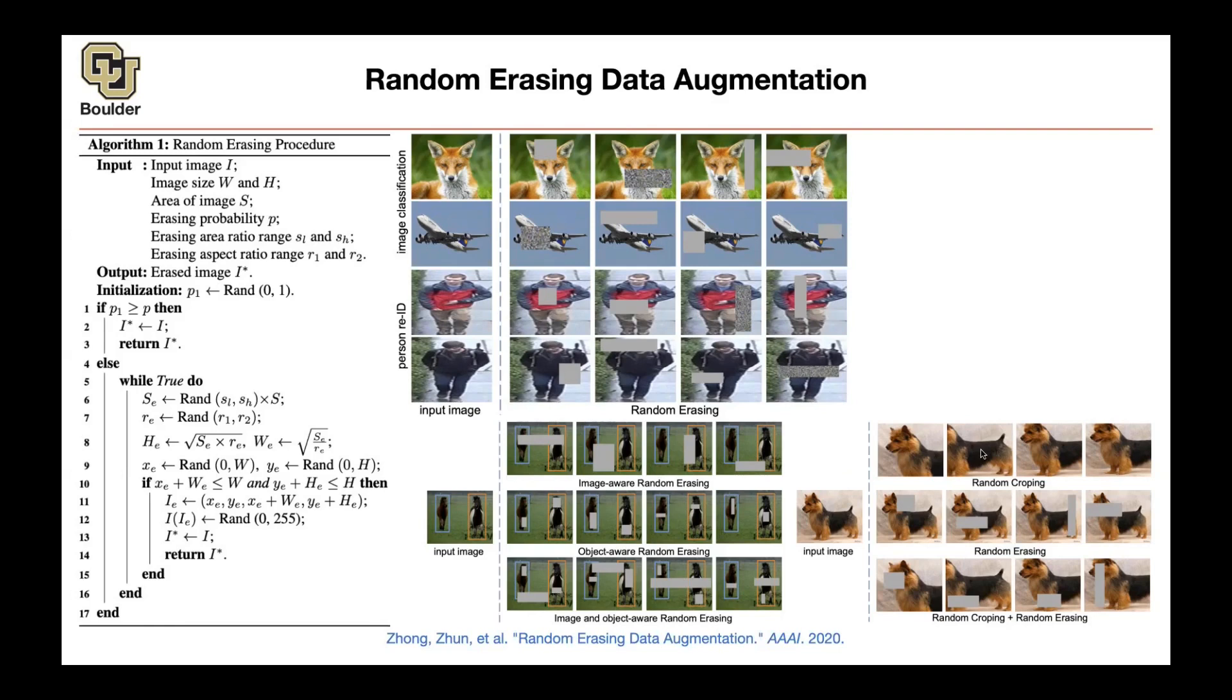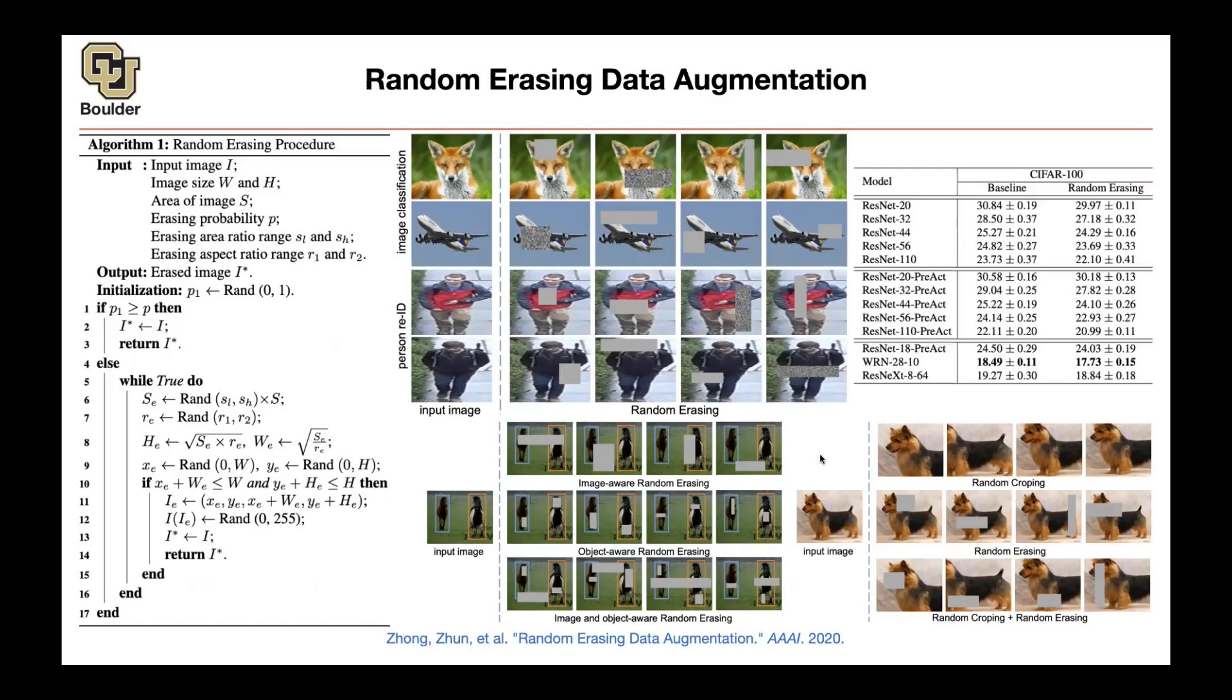Classification should be invariant to these translations. If you take a dog and shift it to the left, this is still a dog. Random erasing helps you reduce your error rate, and see for 100. It's going to help you reduce it across the board.